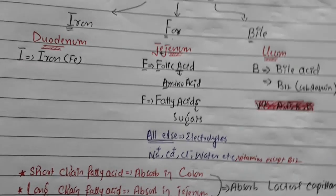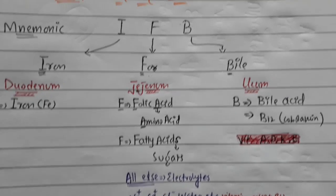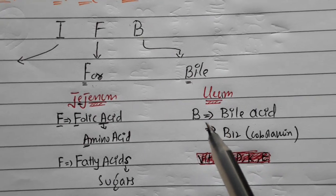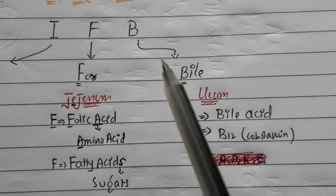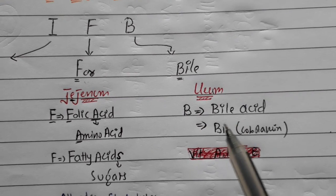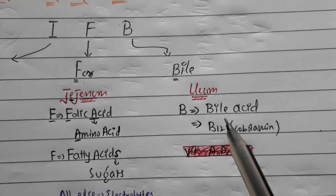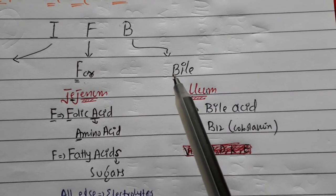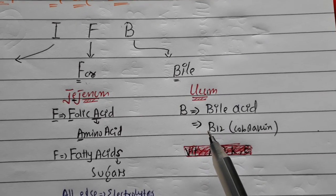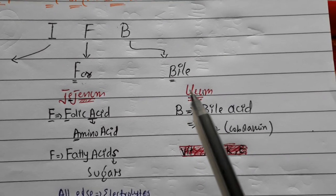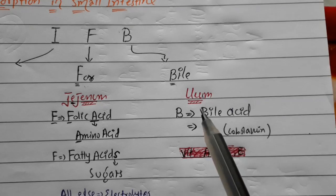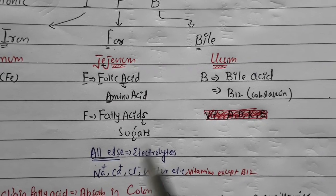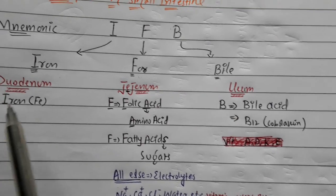From 'B', which corresponds to the ileum: bile salts and bile acids are reabsorbed in the ileum. From 'B' you also remember vitamin B12 (cobalamin), which is absorbed in the ileum.